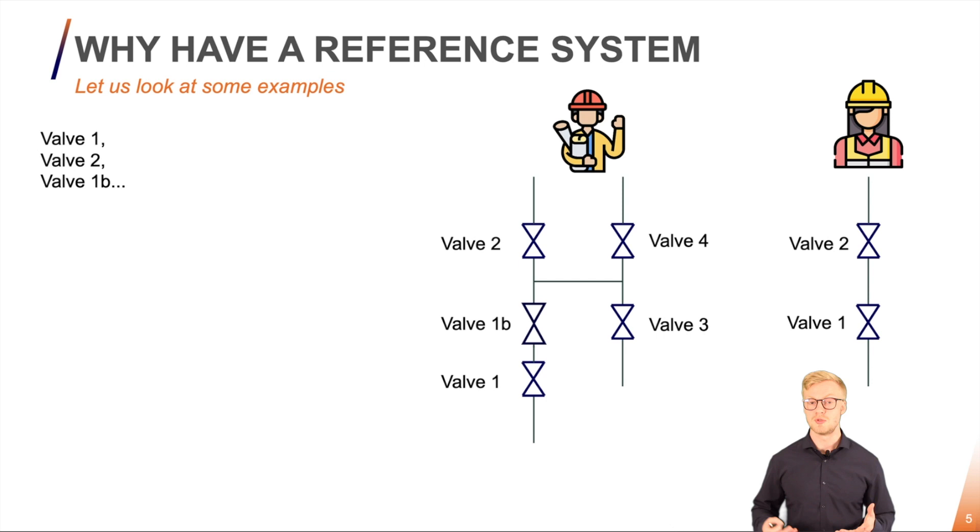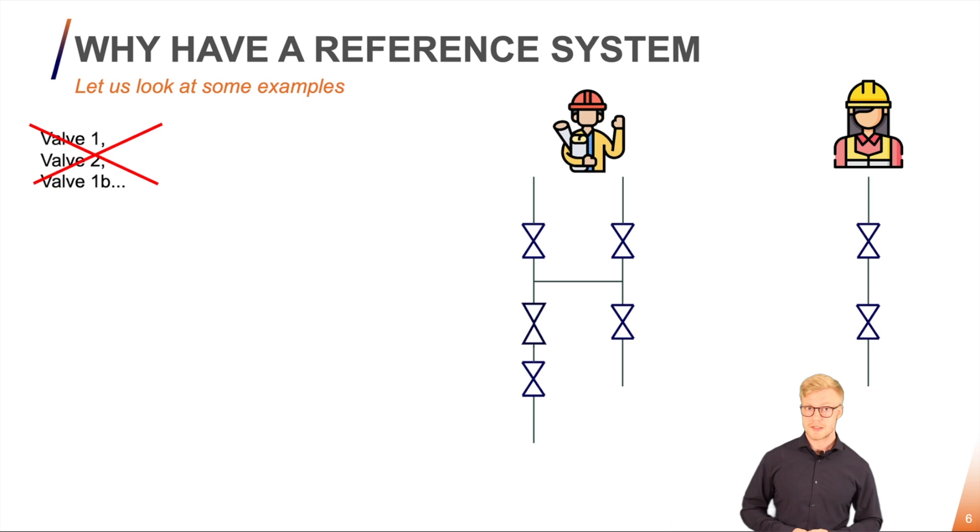Furthermore, if another engineer comes along, they might also start calling the valves valve 1, 2, 3 and so on. And suddenly we have ambiguity. One name leads to two different kinds of valves and that's a no-go. So this system doesn't work.